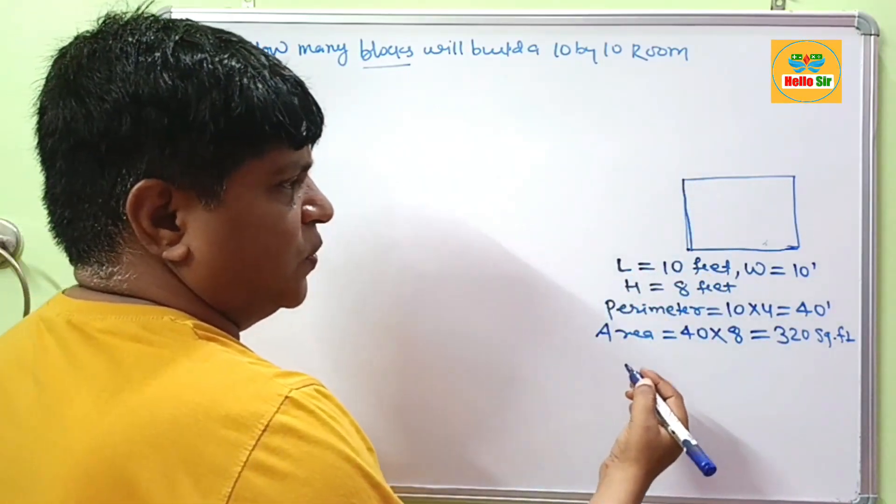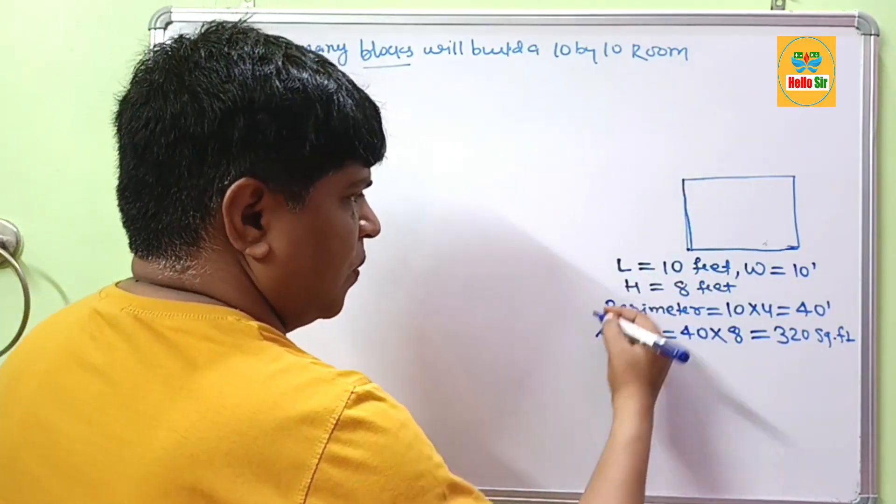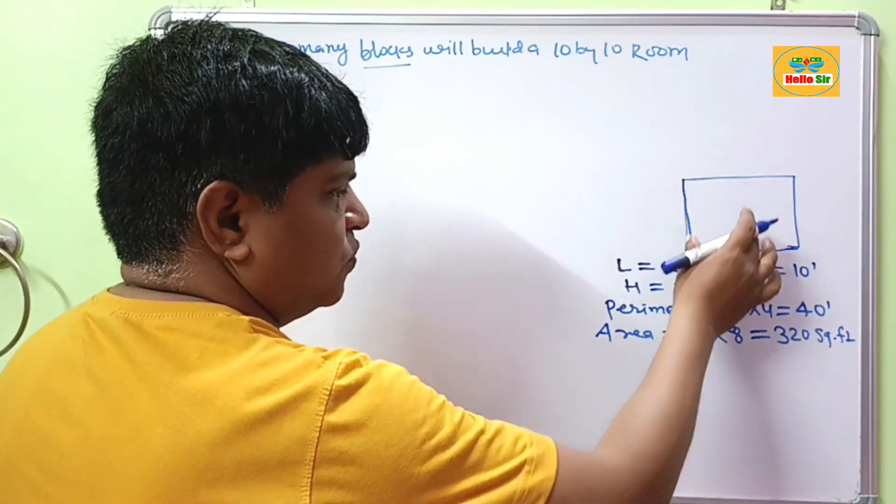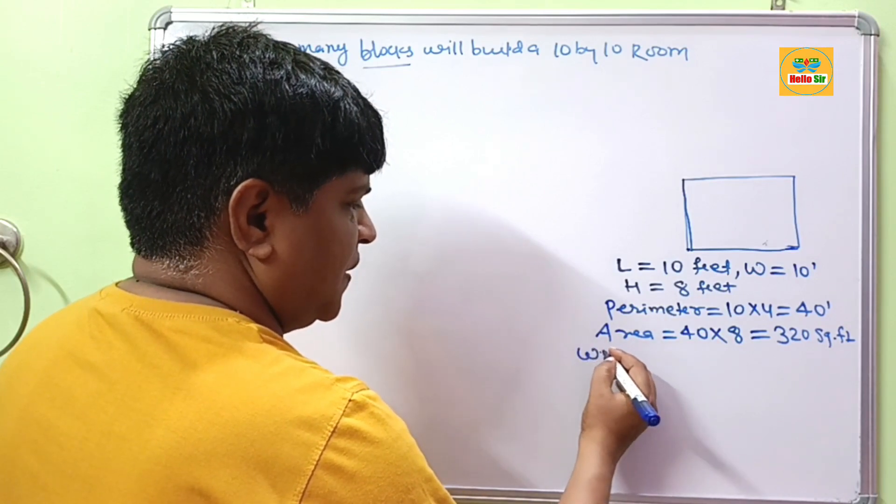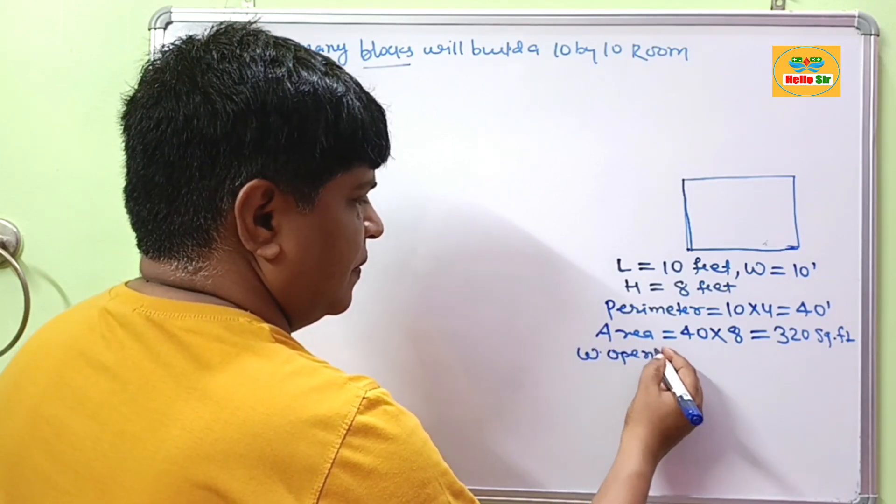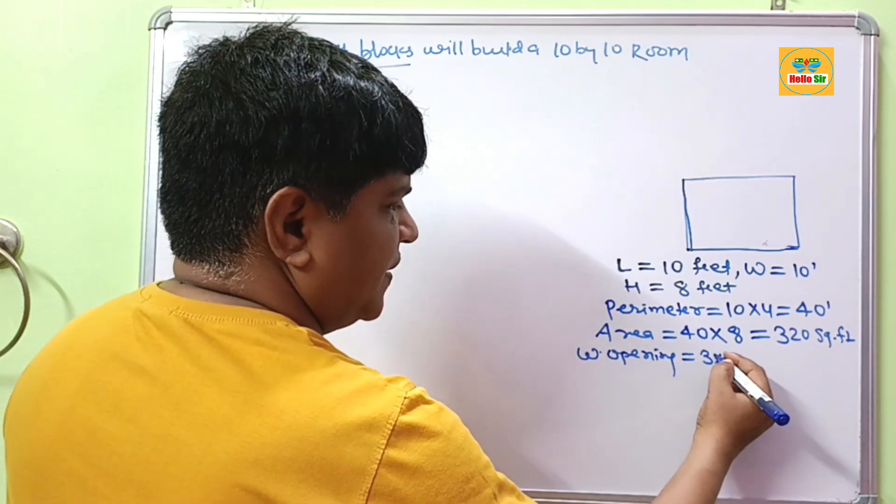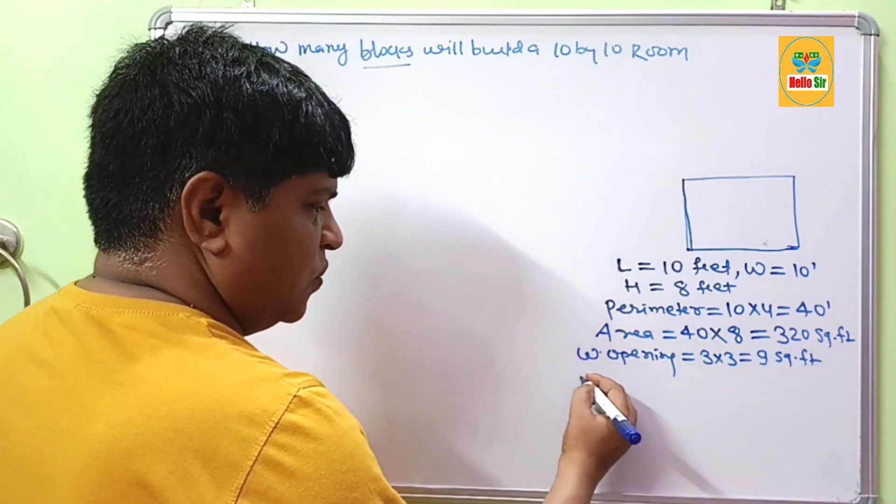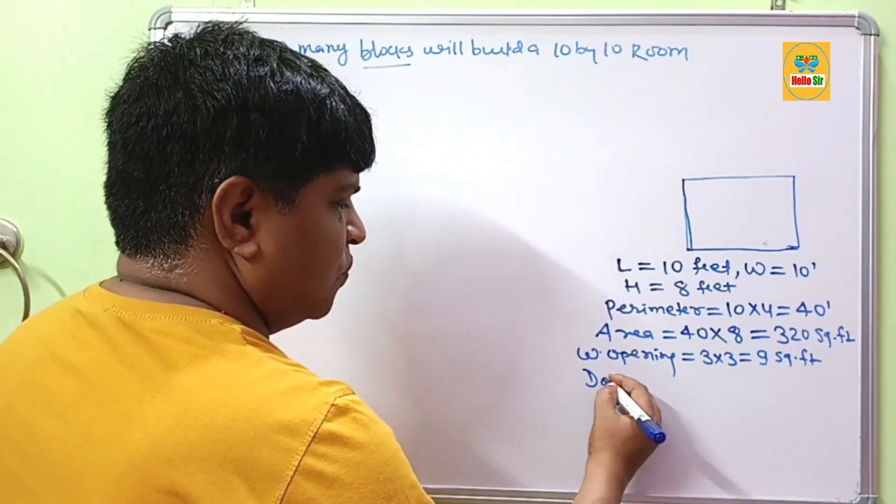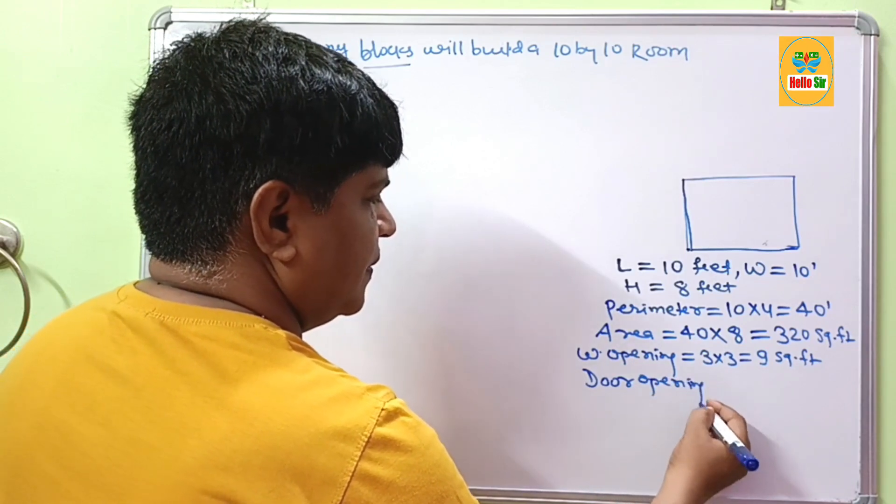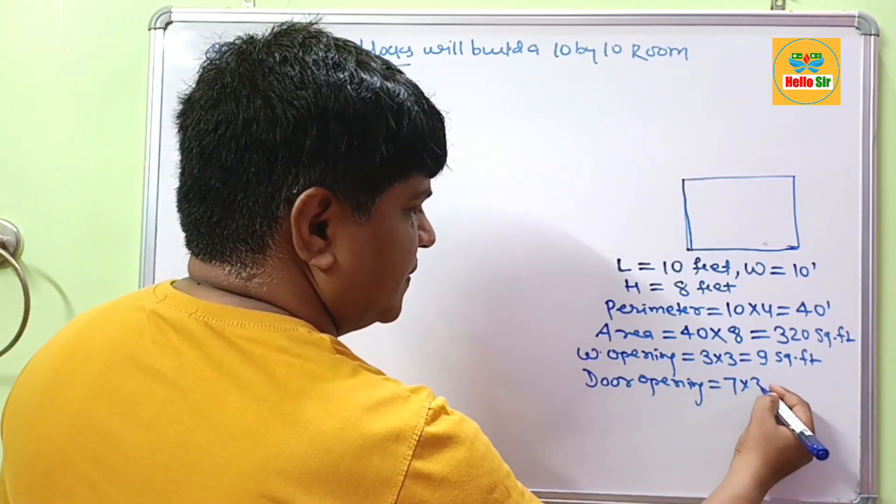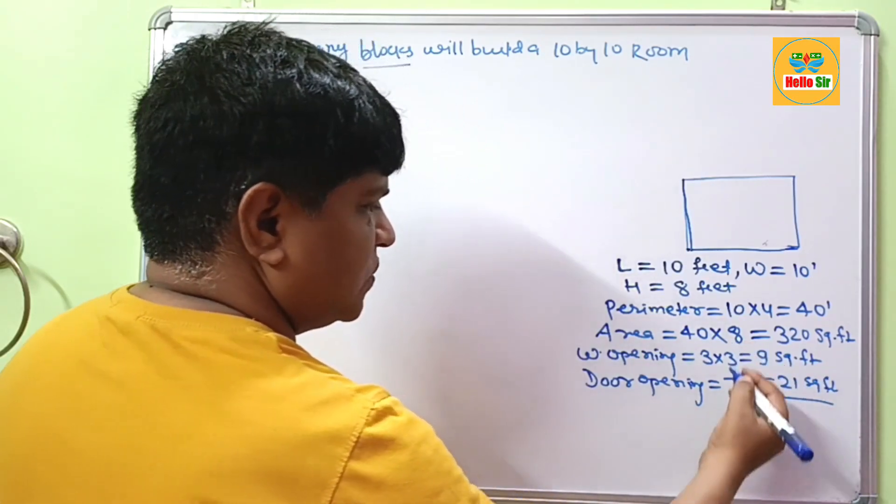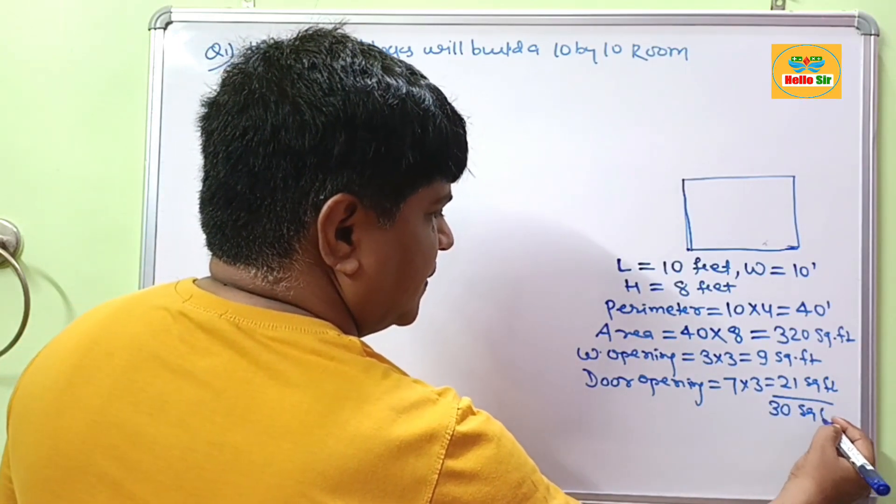This room has one window opening and one door opening. The opening area of this room should be deducted. The window opening is 3 feet by 3 feet, which equals 9 square feet. The door opening is 7 by 3 feet, which equals 21 square feet. All these openings total about 30 square feet.